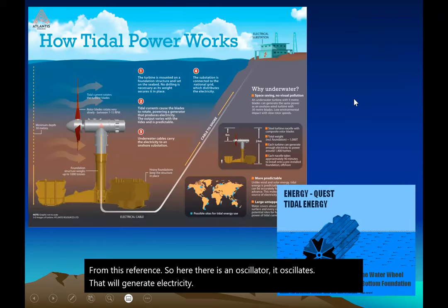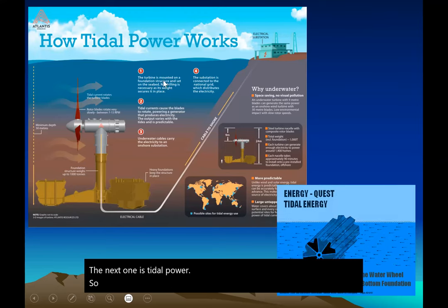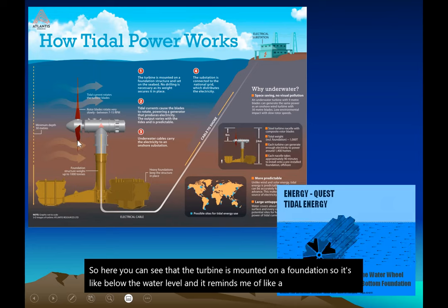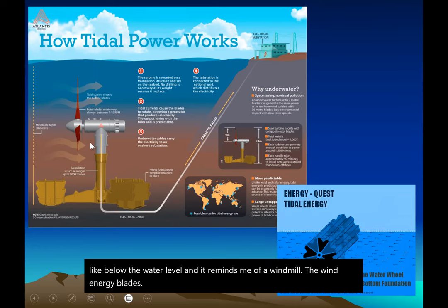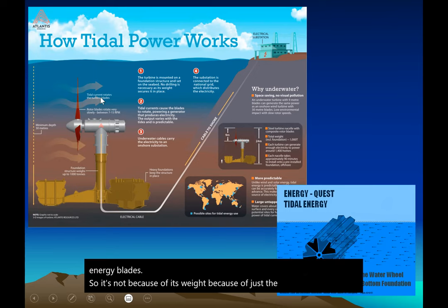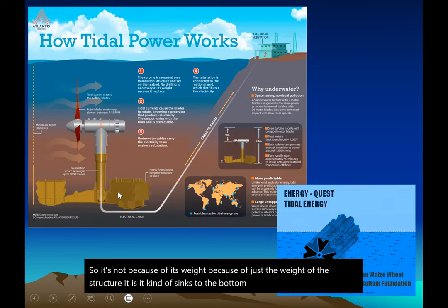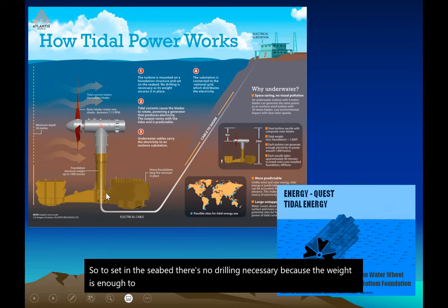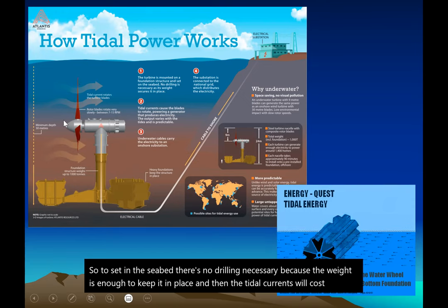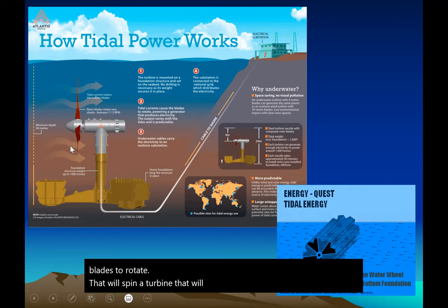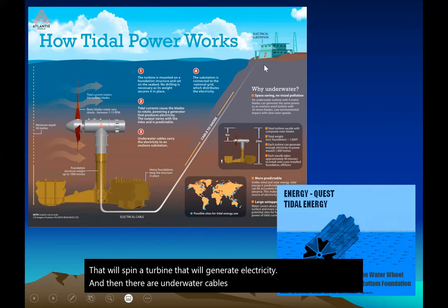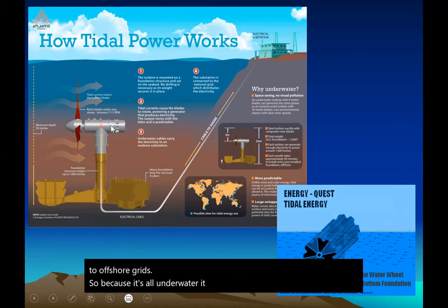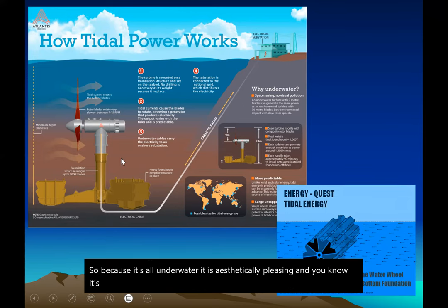Tidal power turbines are mounted on a foundation below the water level, resembling underwater wind turbine blades. Because of the weight of the structure, it sinks to the ocean floor — no drilling is necessary because the weight is enough to keep it in place. Tidal currents cause the blades to rotate, spinning a turbine to generate electricity. Underwater cables carry the electric current to offshore grids. Because it's all underwater, it is aesthetically pleasing and better for the environment.